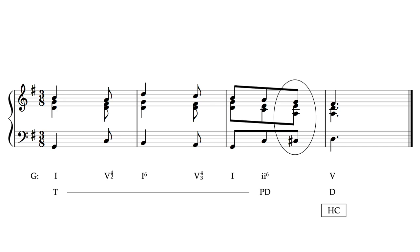This chord looks like a dominant seventh chord — a major-minor chord. If we're thinking about just these last two chords in D major, this looks an awful lot like five-six-five. We're in G major globally, but what we're doing is borrowing a chord from D major — the dominant — to get to our global dominant of D major. Analytically, we're borrowing five-six-five from the key area of five (D major) and applying it to that chord in the G major context.